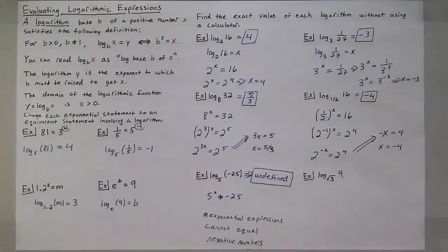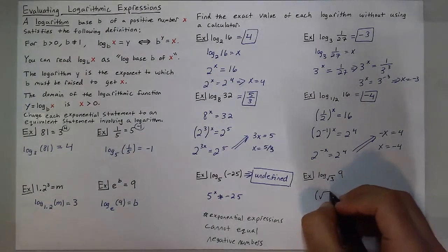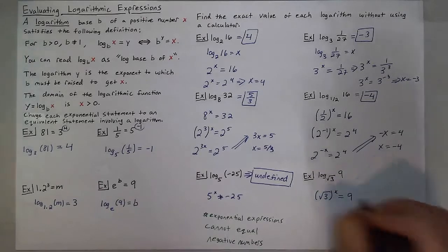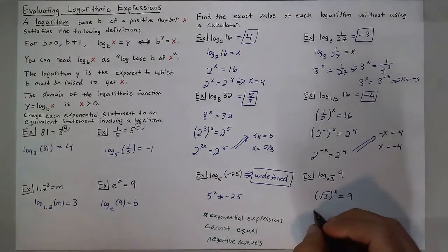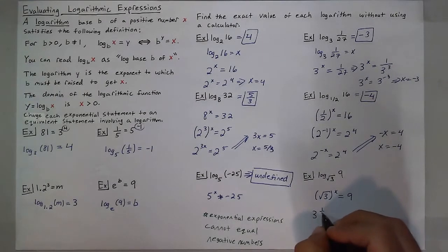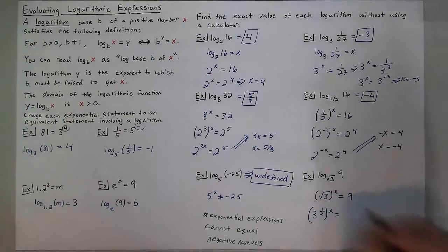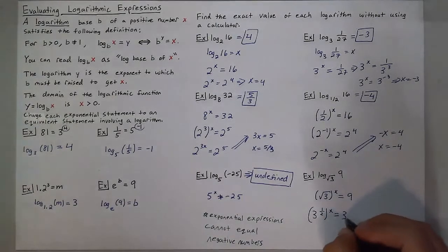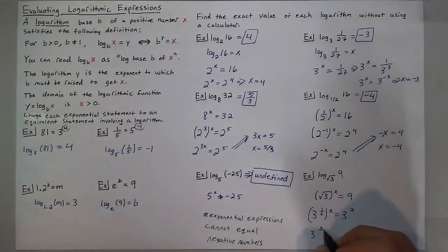Look at this last example where the base of a logarithm is a square root number. So what power do I have to raise the square root of 3 to, to get 9? Well, the square root of 3 can also be written as 3 to the 1/2 power. And 9 can be written as 3 squared. So multiplying my two exponents, I can get 3 to the x over 2 power is equal to 3 squared.